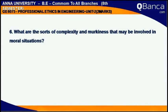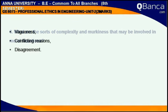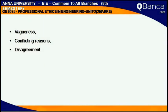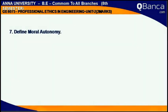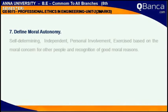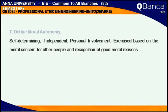What are the sorts of complexity and murkiness that may be involved in moral situations? Vagueness, conflicting reasons, disagreement. Define Moral autonomy: Self-determining, independent, personal involvement.